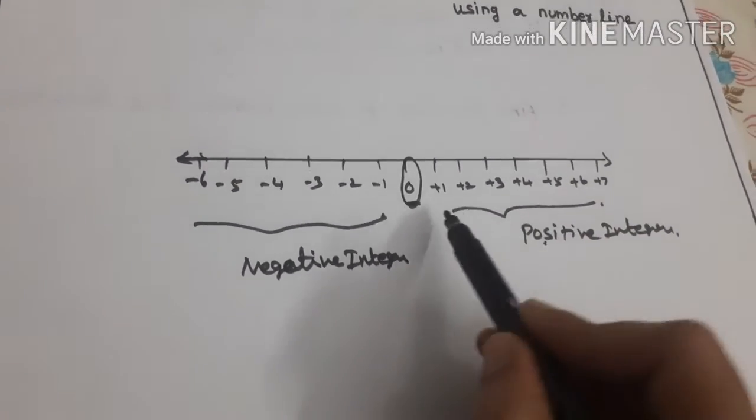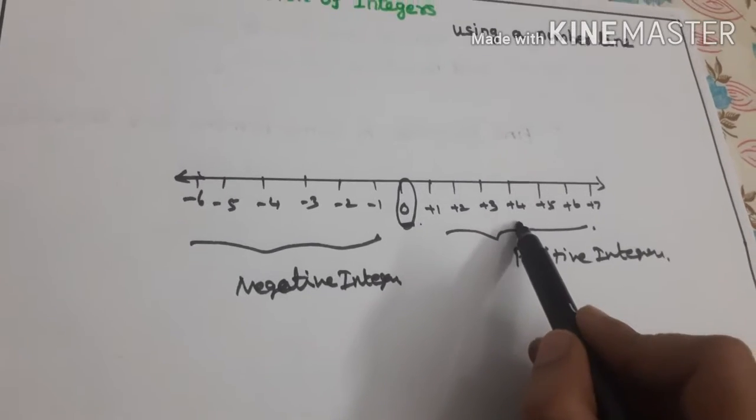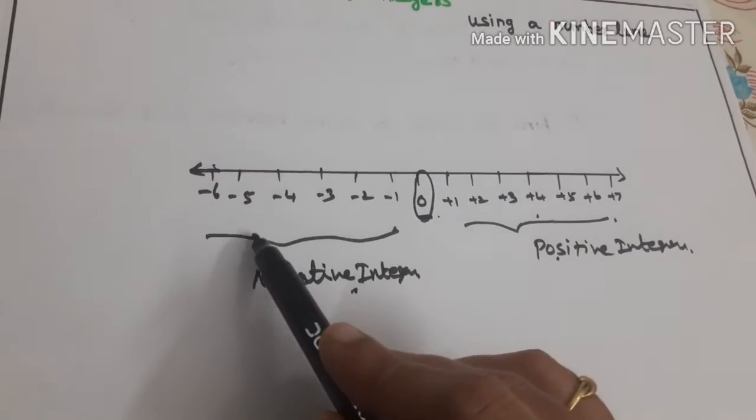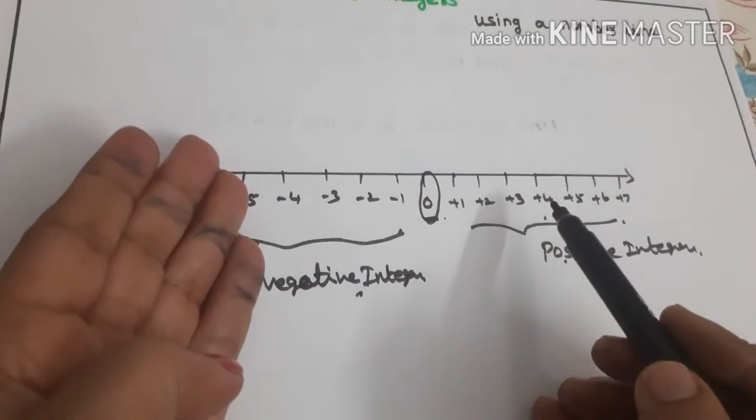Positive integers fall on the right side of 0. Negative integers fall on the left side of 0.